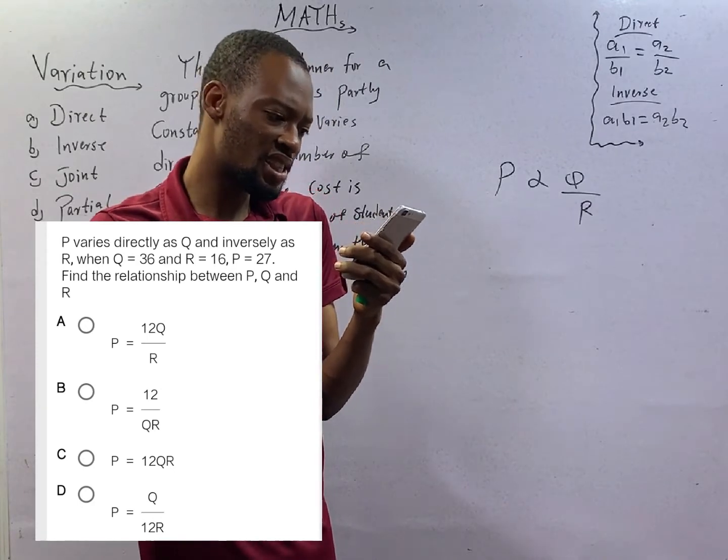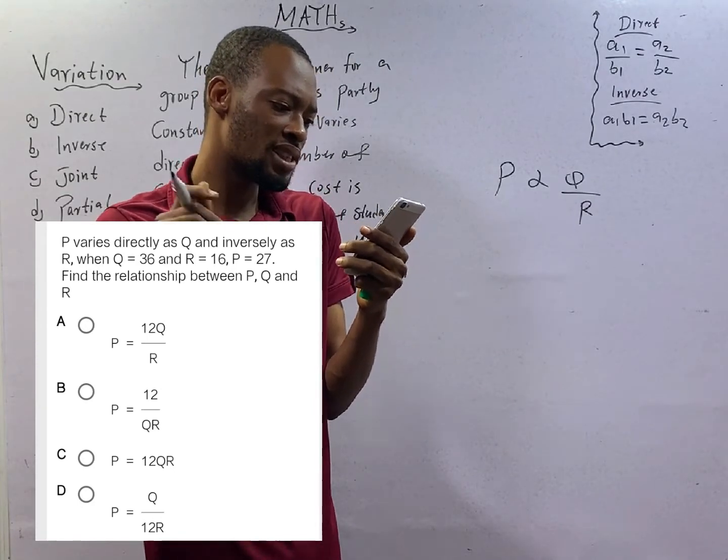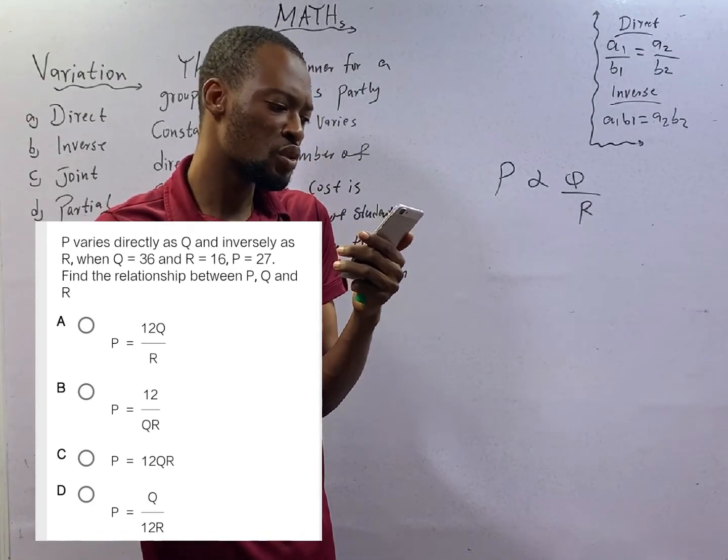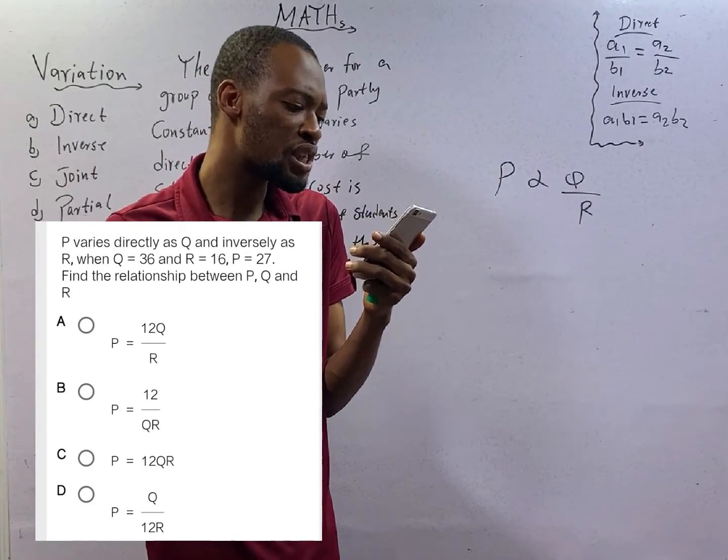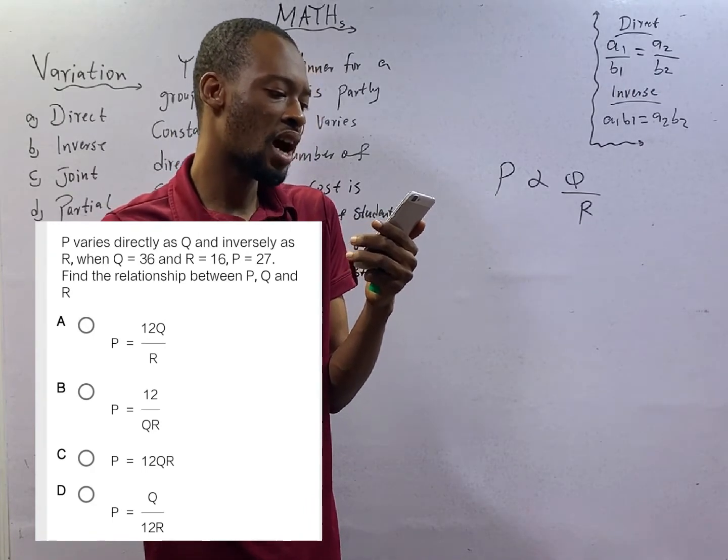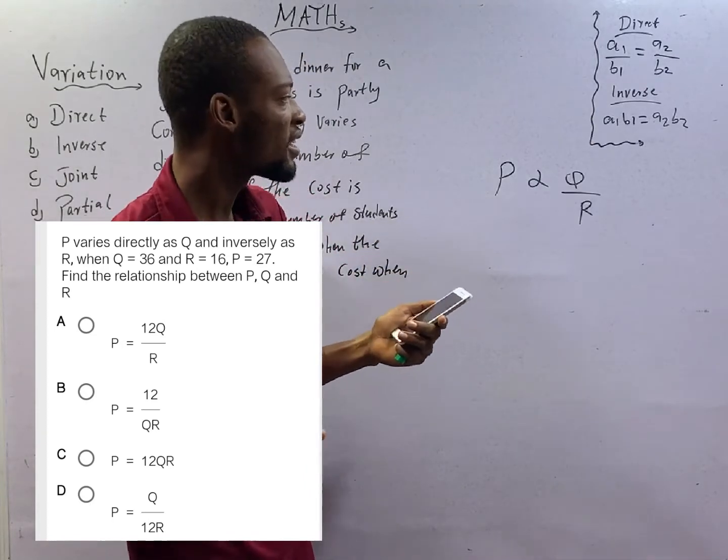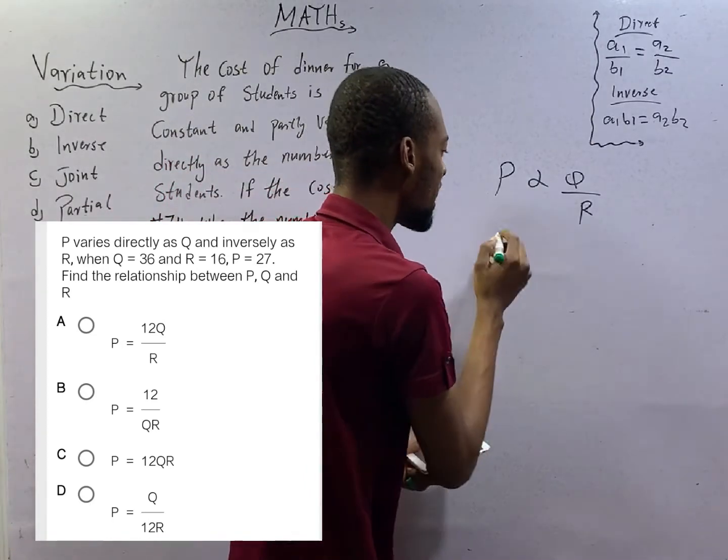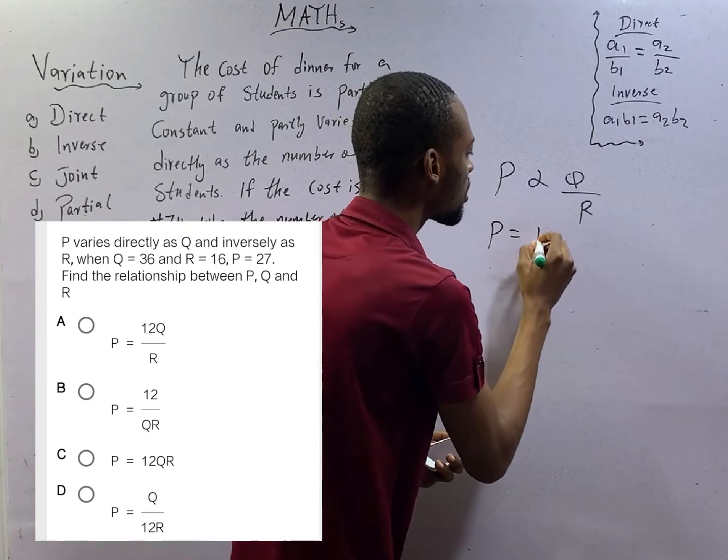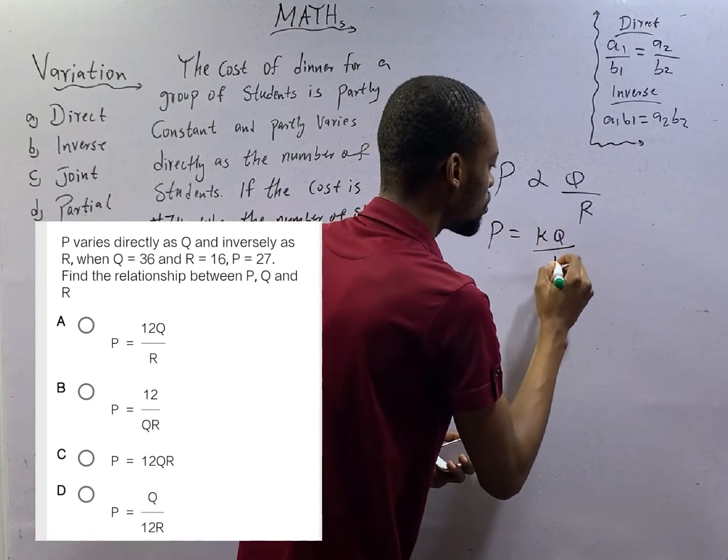When Q is 36, R is 16 and P is 27. Find the relationship between P, Q and R. From here, we know that P equals KQ over R.